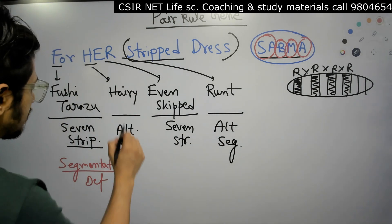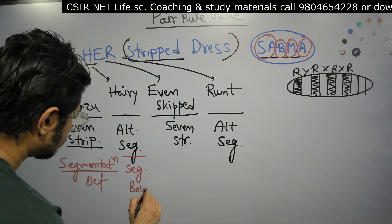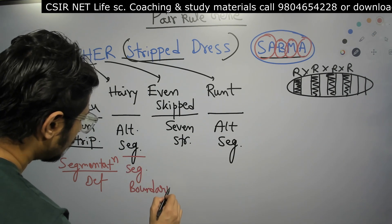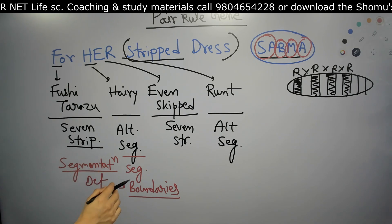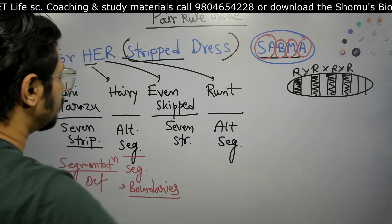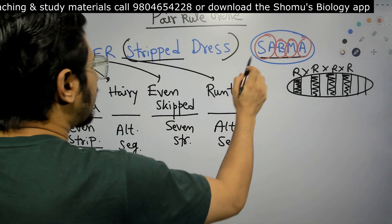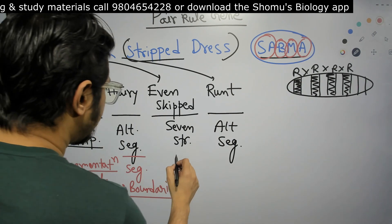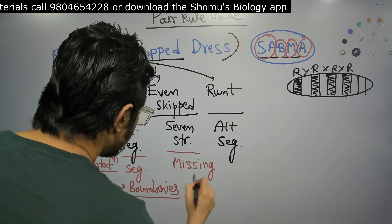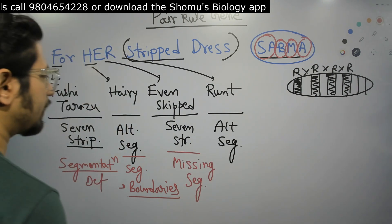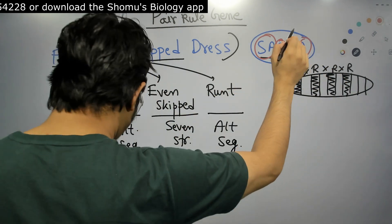B here stands for segment boundaries — Hairy helps in the formation of segment boundaries. So if there is any mutation in Hairy, the segment boundaries will not be formed properly. Then we have M for missing segment: if there is any mutation in Even skipped, there will be missing body segments.